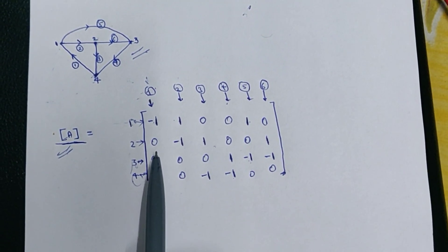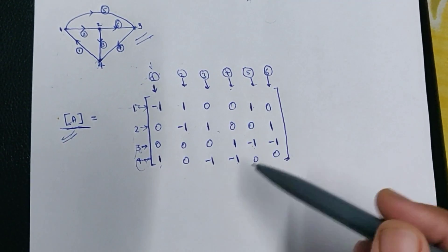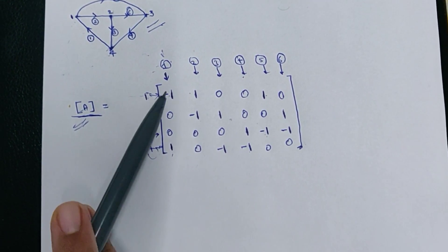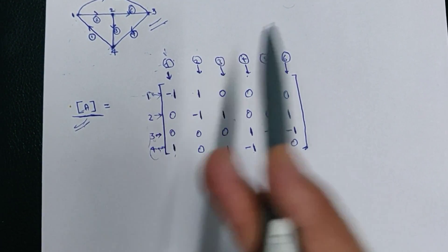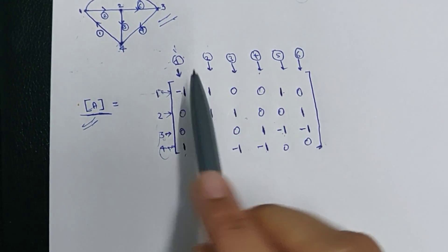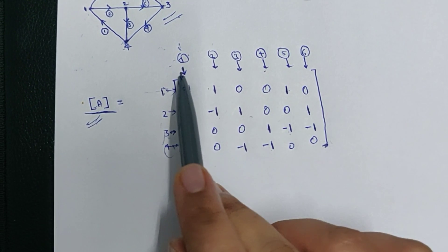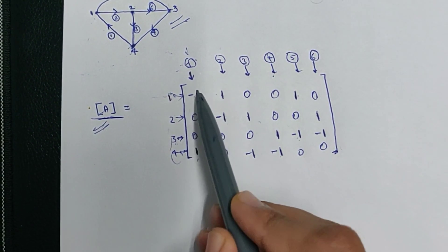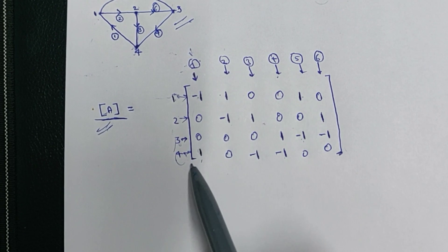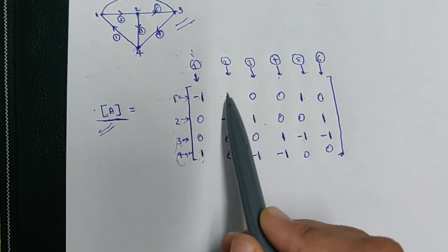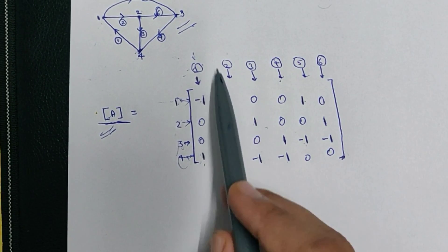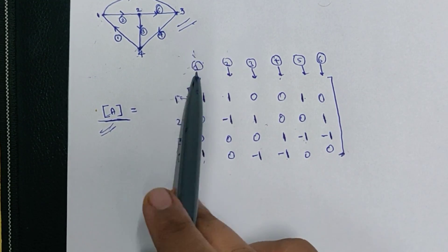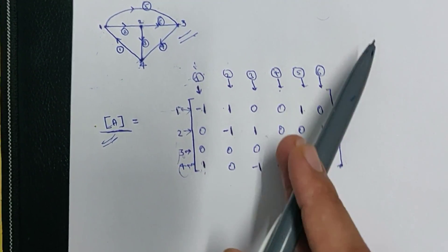This incidence matrix has a very important property: the sum of all the elements in any column is equal to zero. If -1 is there, then +1 is there — one and minus one, so the sum of all the elements in any column is equal to zero. This is a very important property of the incidence matrix.